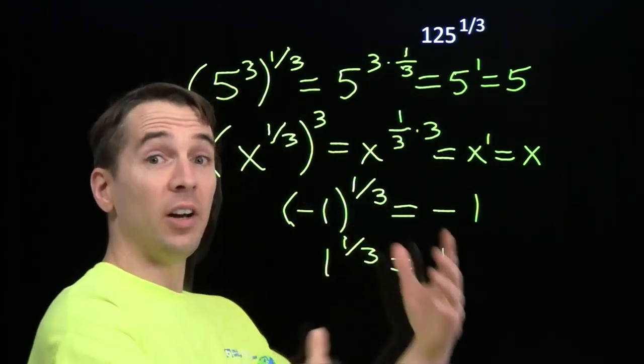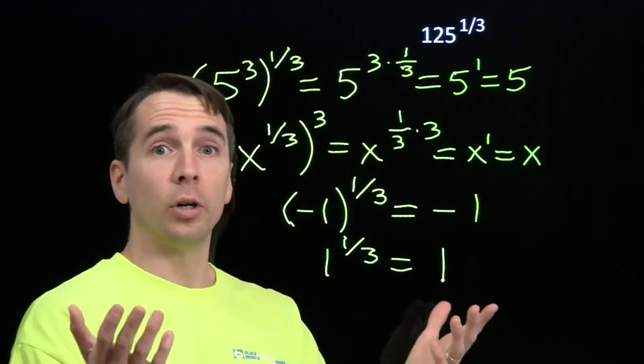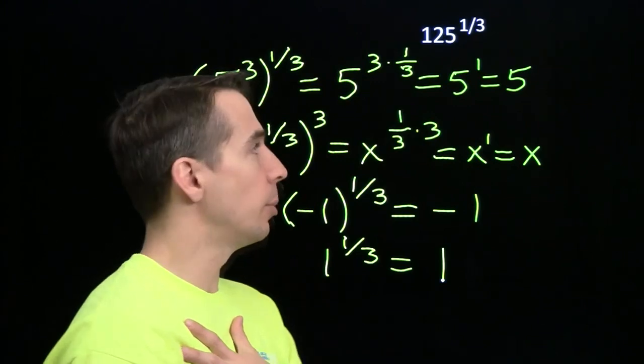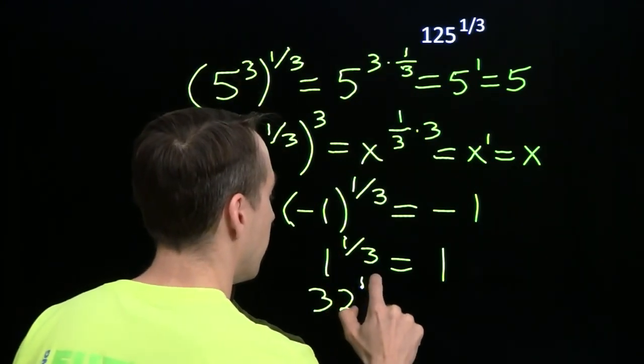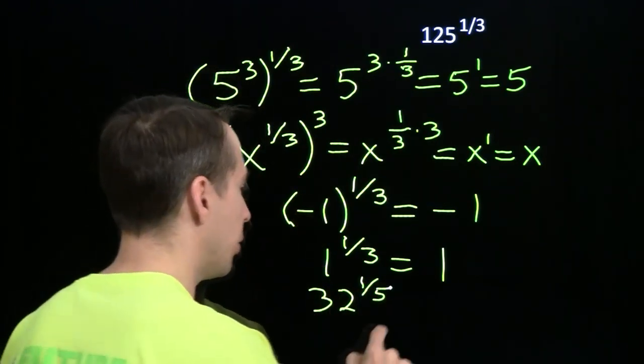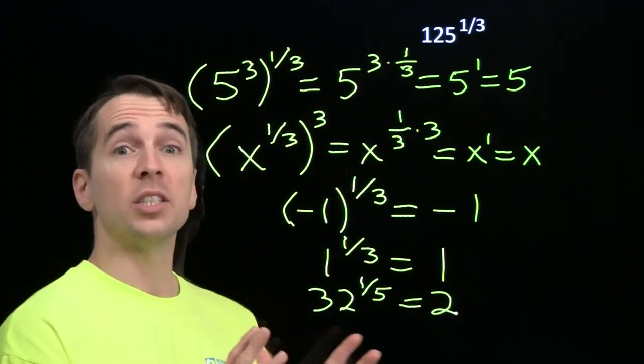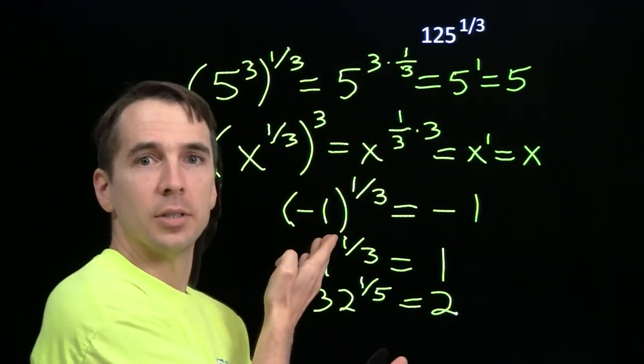And in the same way, we can go on and define all the other fractional exponents, like something raised to the 1 quarter. Well, that's the number that you have to raise to the 4th power to get back to the original number. Or if you had something like 32 to the 1 fifth, that's the number that you have to raise to the 5th power in order to get 32. That's 2. In our next couple lessons, we'll look at some more complicated problems using these fractional exponents.